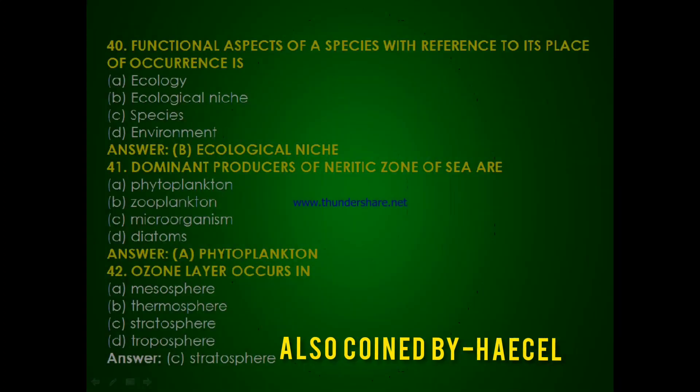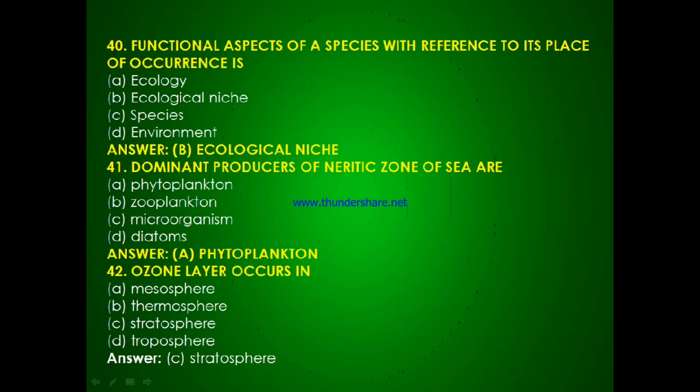Question 38: Functional aspects of a species with reference to its place of occurrence is — ecology, ecological niche, species or environment? The answer is B, ecological niche. Question 39: Dominant producers of the neritic zone of sea are — phytoplanktons, geoplanktons, microorganisms or diatoms? The answer is A, phytoplanktons.